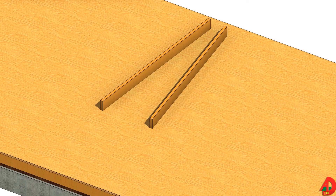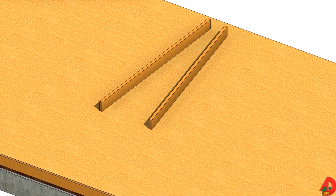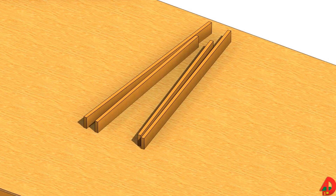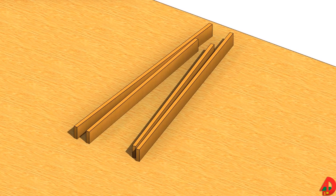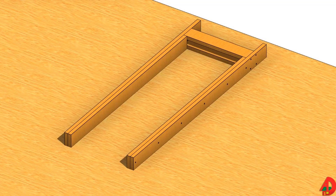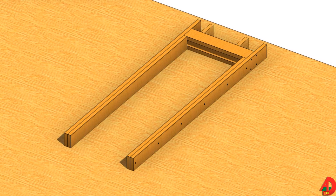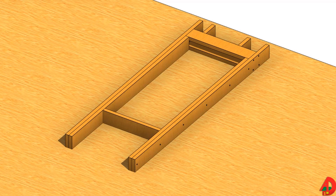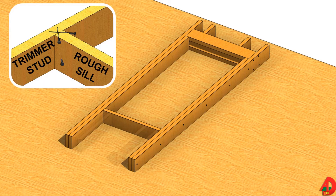Many carpenters prefer to frame door and window openings before assembling the rest of the wall. Select two pre-cut wall studs and lay them on the subfloor. Nail trimmer studs to wall studs using 16D nails staggered 16 inches on center. Place the header between wall studs and top of trimmer studs. In this example, cripple studs are required over the header — toe nail cripple studs into header using four 8D nails, two on each side. The procedure for framing window openings is the same as framing door openings. A rough sill and bottom cripple studs are then added. Cripple studs follow the stud layout, which is usually 16 inches on center.